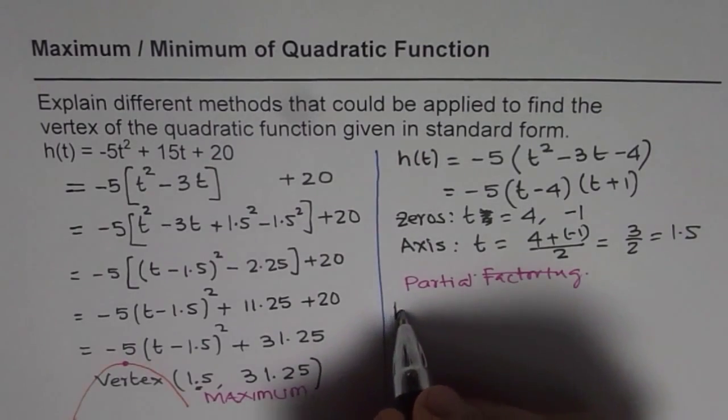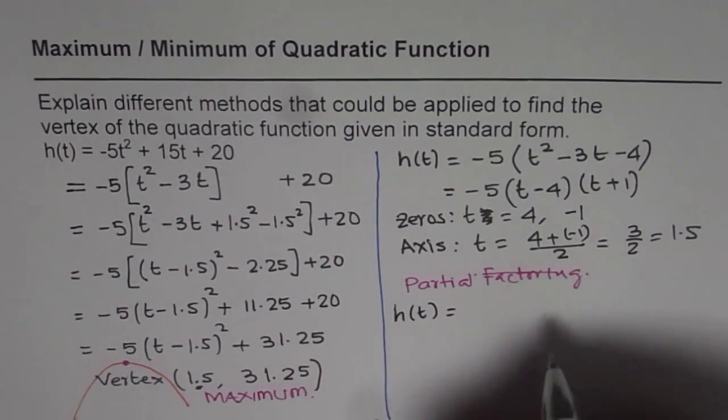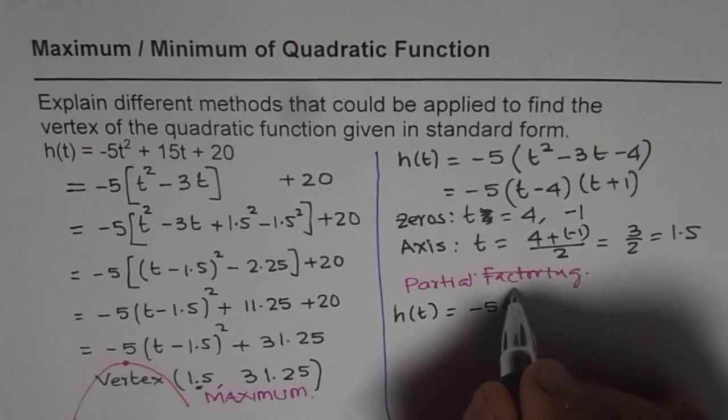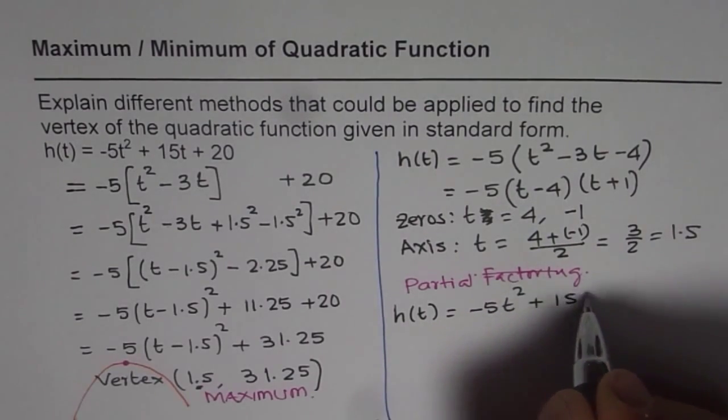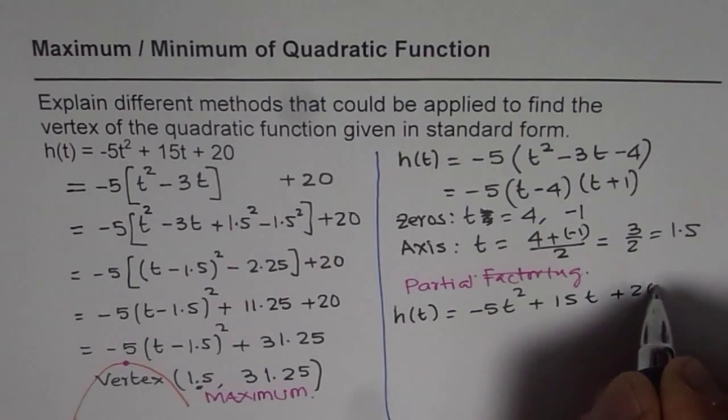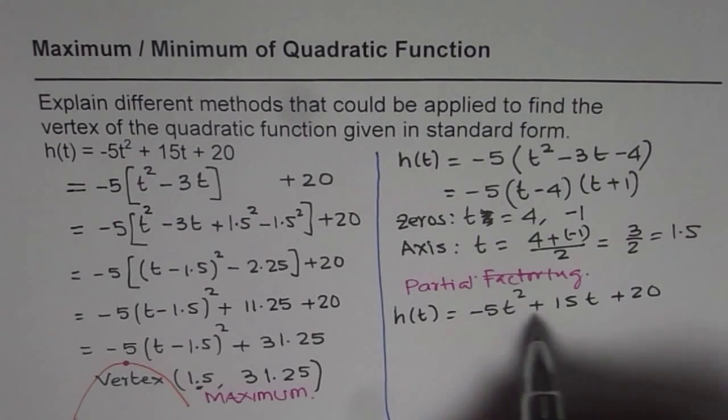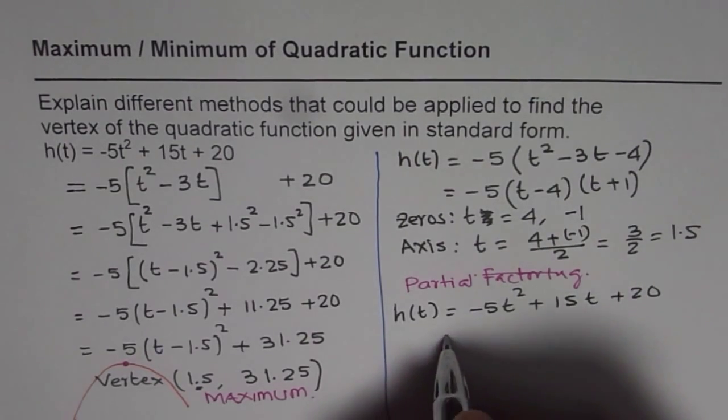But you will appreciate once I do it how easy and good this method is. Let's begin with our equation which is -5t² + 15t + 20. Now in partial factoring, you do not have to factor the three terms. You can factor the first two.